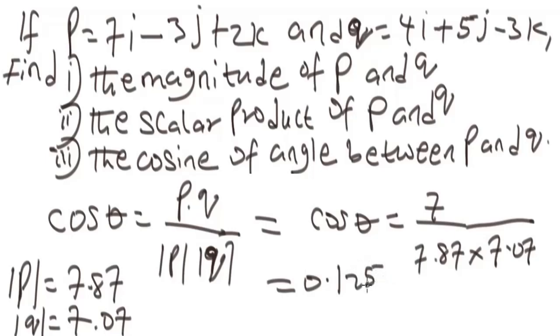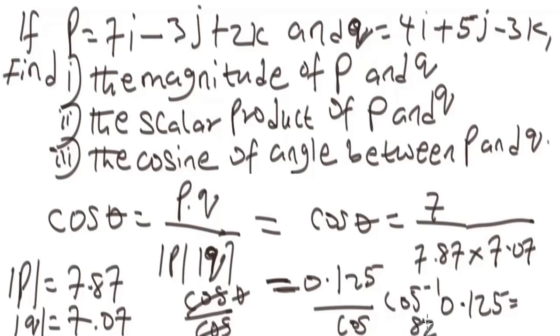Leaving it in 3 decimal places. We have cos theta equals 0.125, so to make theta the subject of formula, we solve by cos inverse. This is going to be cos inverse of 0.125. Cos inverse of 0.125 will give us 82.81 degrees, if we are leaving it in 2 decimal places. This will be the cosine of the angle between vector P and Q.